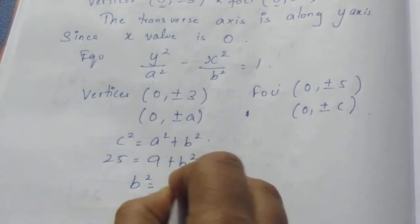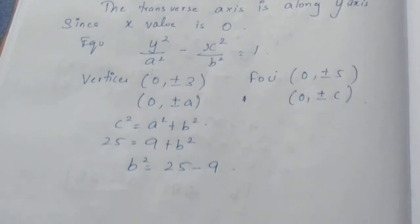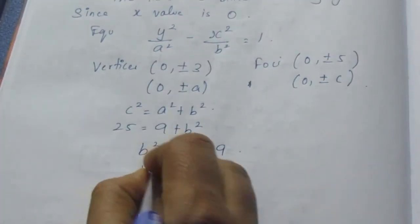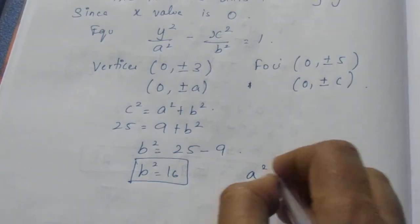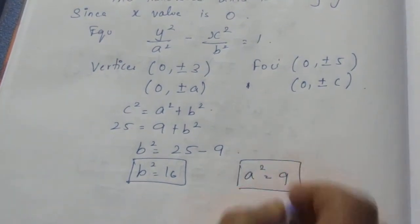So b² will be 25 - 9, b² = 16, and we know that a² = 3², that is 9.